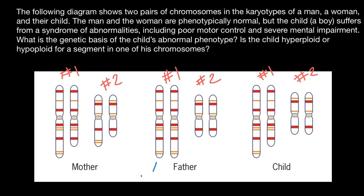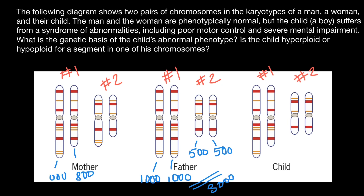Let's say that this chromosome has 1,000 genes. This chromosome also has 1,000 genes. And each short chromosome has 500 genes, so the total number of genes would be 3,000. Comparing with the mother's genotype: let's say this chromosome has 1,000 genes, and this short one is missing a fragment, so let's say it has 800 genes. And this one is identical to that of the father, with 500 genes.